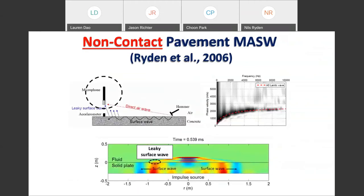A few years later, Dr. Ryden replaced the accelerometer with a microphone hanging about 10 centimeters above the pavement surface, and obtained an almost identical dispersion trend. Numerical modeling shows a solid plate representing the pavement layer and a fluid body representing air. An impact at the center generates surface waves propagating in both directions, with a small amount of energy leaking into the air body — picked up by the microphone. This is called leaking of surface waves, enabling a completely non-contact, rolling receiver array.